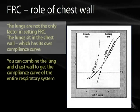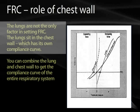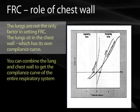The chest wall is also going to play a role in contributing to FRC. These graphs show the effect of both the chest wall and the lung on the compliance of the entire respiratory system. Looking first at the lung: imagine you had just a set of lungs and you looked at the volume and the pressure it took to increase that lung volume — that's the same compliance curve we showed in the last section.